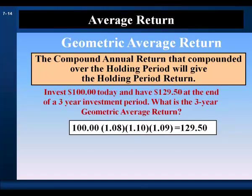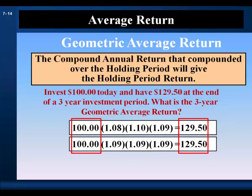In the holding period example, starting with $100 and earning 8%, 10%, and 9% over three years produces a future value of $129.50. We could also reach that same future value by earning the 9% geometric average return each year. The geometric average return describes how we get from point A to point B in time by earning a constant return each period. Earning 8%, then 10%, then 9% is equivalent to earning 9% per year for three years — that is the interpretation given to the geometric average return.